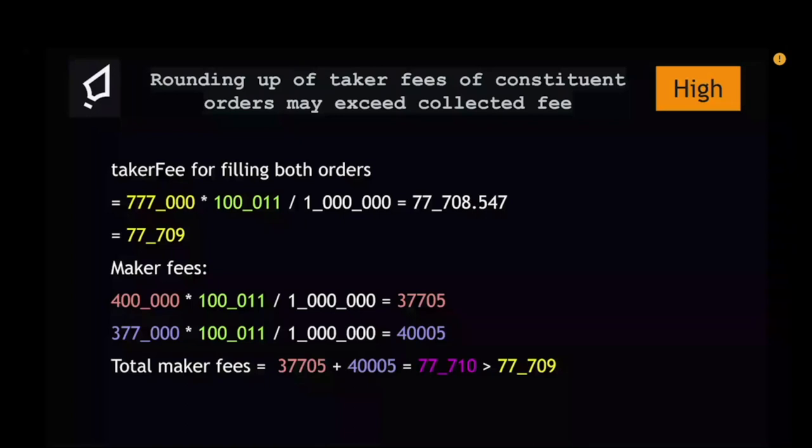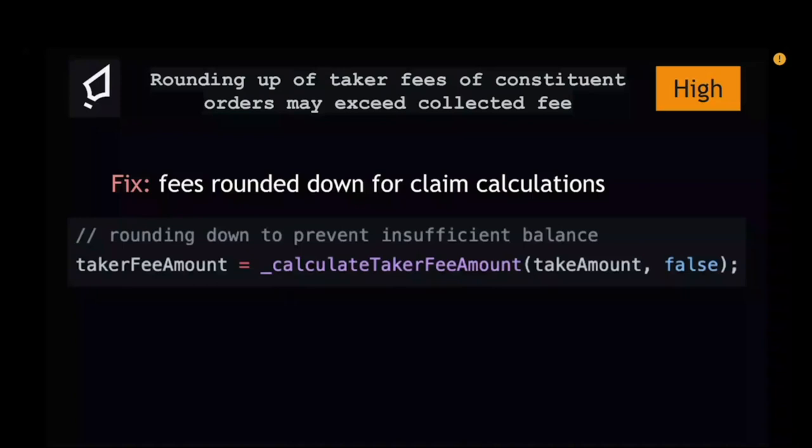You realize the total maker fees are greater by one — meaning the fees to be distributed could potentially exceed the fees that were collected. The fix is to round down when doing the claim calculation instead of rounding up.